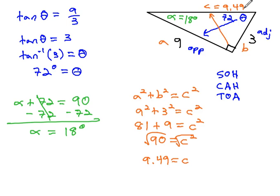We have now found the missing sides and angles of this triangle. 18 degrees, 72 degrees, and the side of 9.49.